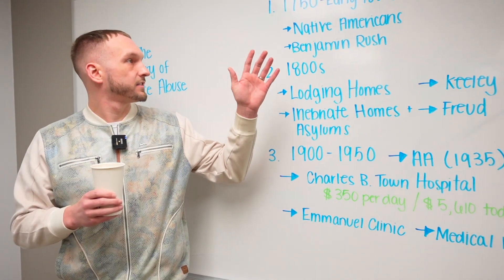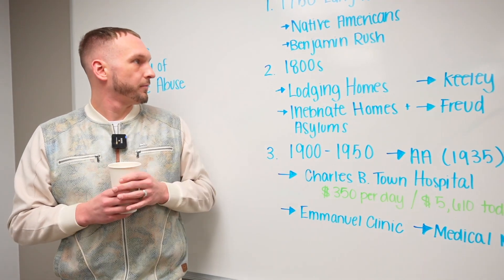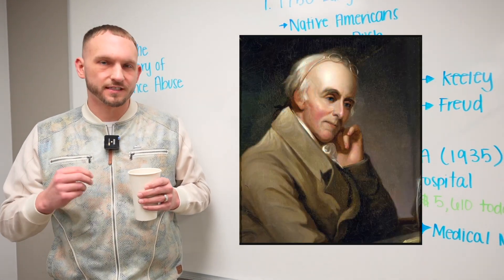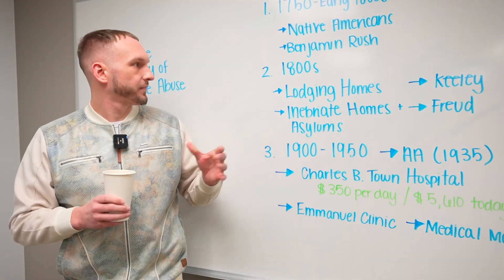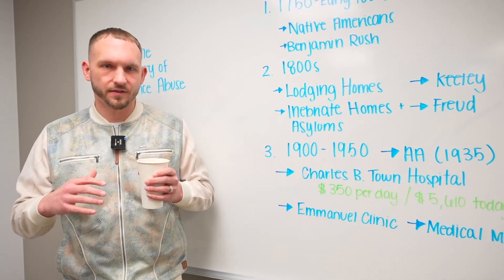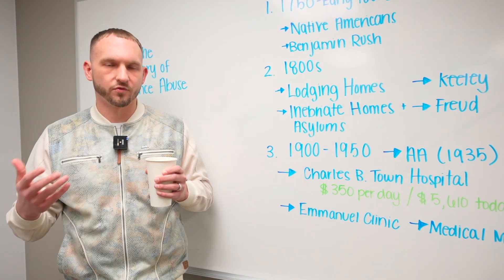So we can see early interventions, like I said, with Native Americans. We have Benjamin Rush, who was the first person to label this a disease. In the 1800s, it's where we start seeing, which we have now, sobriety homes, halfway houses.